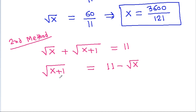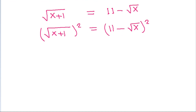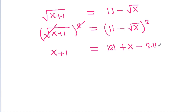If we square both sides, then a square root of x plus 1 squared equals 11 minus a square root of x squared. The square roots cancel, giving x plus 1 equals 121 plus x minus 2 times 11 times a square root of x, and x cancels from both sides.